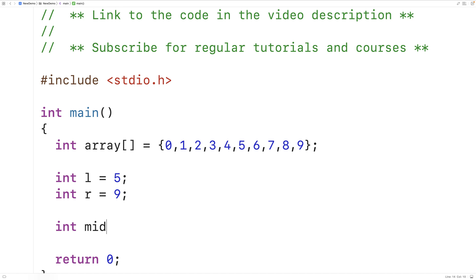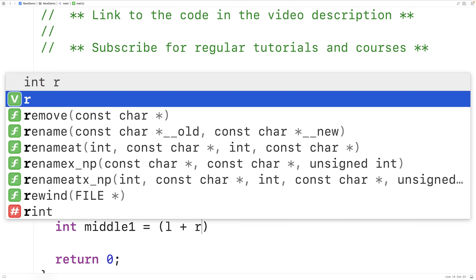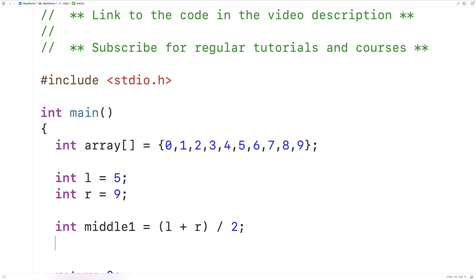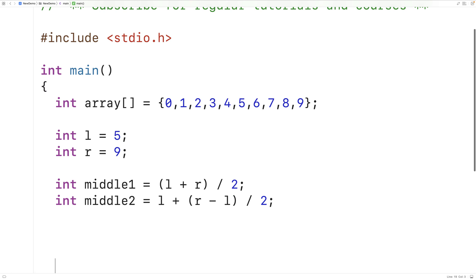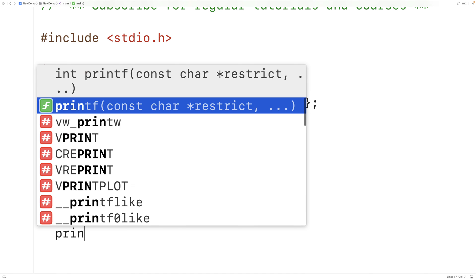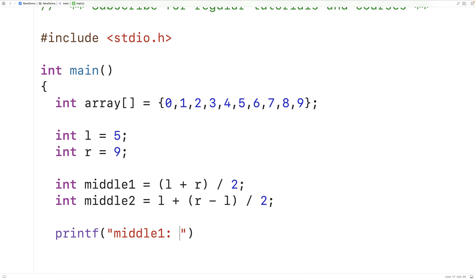We'll have int middle1 is equal to L plus R divided by two. And we can have int middle2 is equal to L plus R minus L divided by two. Then we'll print out middle1 and middle2, and we'll find that in both cases, we get seven.